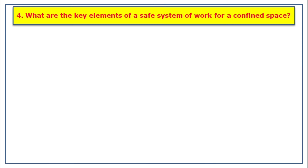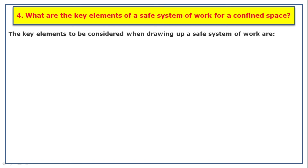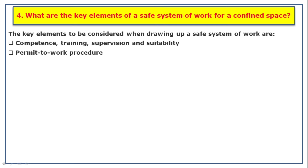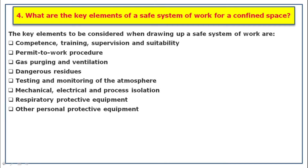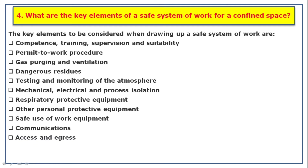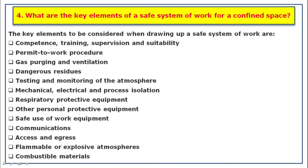The fourth question is: what are the key elements of a safe system of work for a confined space? The key elements to be considered when drawing up a safe system of work are: competency, training, supervision and suitability, permit to work procedure, gas purging and ventilation, dangerous residues, testing and monitoring of the atmosphere, mechanical, electrical, and process isolation, respiratory protective equipment, other personal protective equipment, safe use of work equipment, communications, access and egress, and flammable or explosive atmospheres and combustible materials.